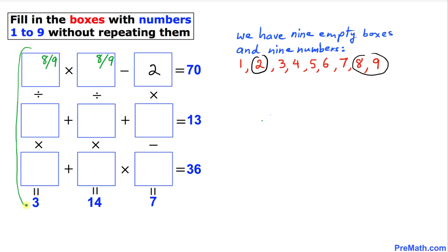Now let's go ahead and focus on this left-hand side column. We are supposed to fill in these two boxes so that we can get our answer 3. We can see if I put 9 in this box, 9 divided by 3 is going to give us 3 times 1, which is going to be 3. So therefore, 9 is going to be the correct number in this box. That means 8 is going to be in this box.